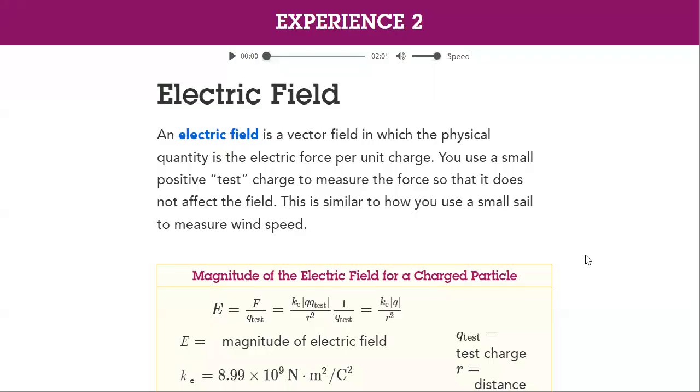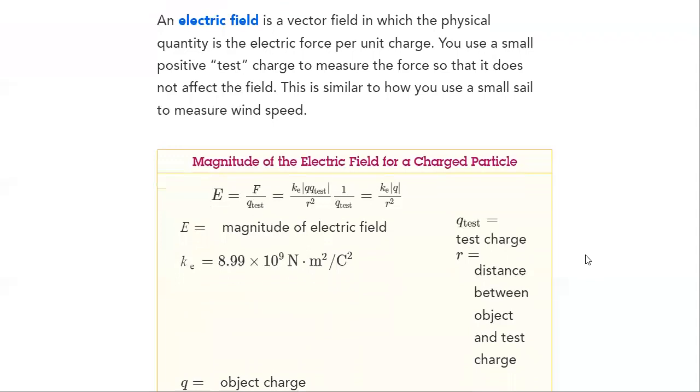Then, we will define it as we used to using equations. Magnitude of the electric field for a charged particle is equal to the force divided by Q test. Q test is a test charge that we have put in that field, how that will affect it. And we have KE, which is 8.99 times 10 to the power 9 newton meter square per coulomb square.